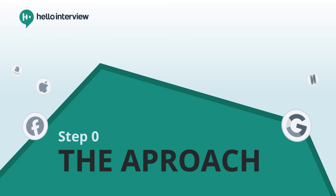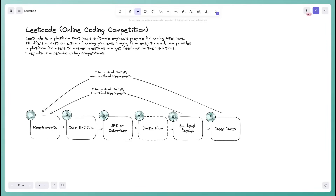Before we jump into solving the problem, let's break down the framework we're going to use to answer this system design question. We're going to start by going over the requirements — both the functional requirements, which are the core features of the system, and the non-functional requirements, which are qualities like scalability and low latency.